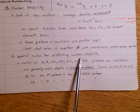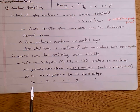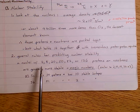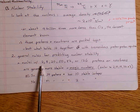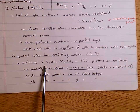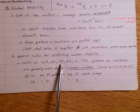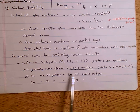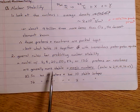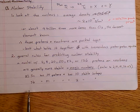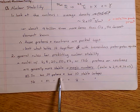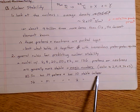In the general rules for predicting nuclear stability, one thing to look at is what are called the magic numbers. It turns out nuclei with 2, 8, 20, 50, 82, or 126 protons and/or neutrons in the nucleus tend to be more stable. For example, tin has 50 protons in its nucleus and has 10 stable isotopes.